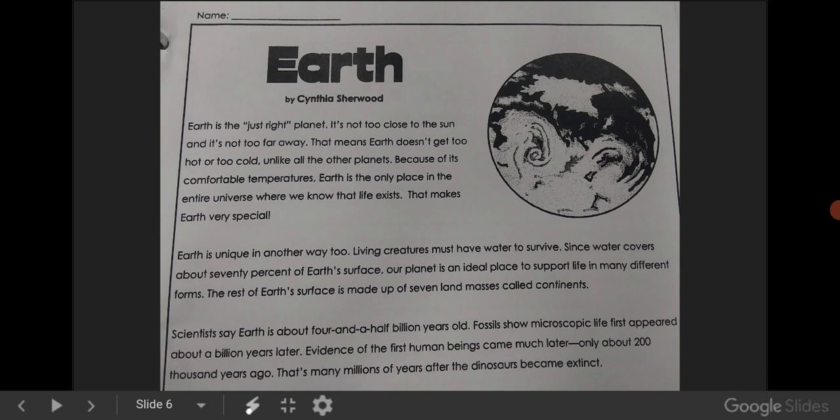Earth. Earth is the just right planet. It's not too close to the sun, and it's not too far away. That means Earth doesn't get too hot or too cold, unlike all the other planets. Because of its comfortable temperatures, Earth is the only place in the entire universe where we know that life exists. That makes Earth very special.